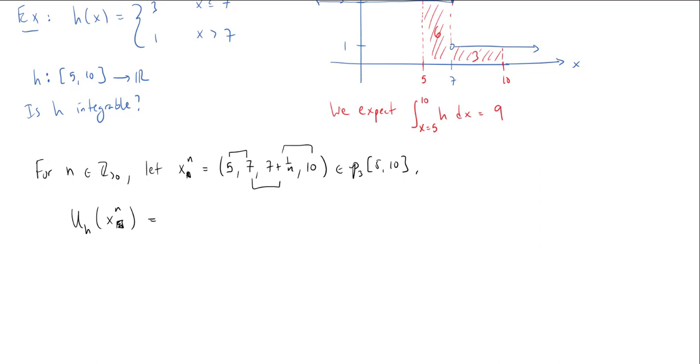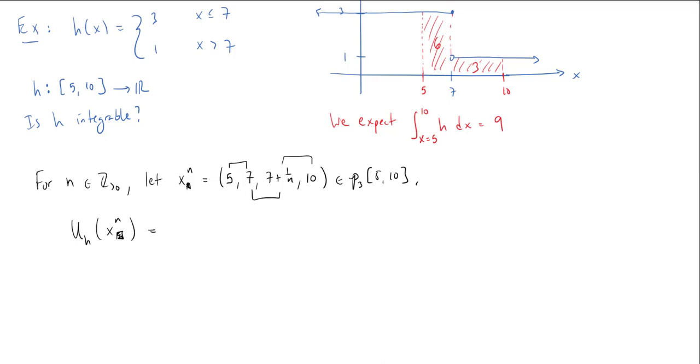What I need to do is for each of these intervals—there's one interval, a second interval, a third interval—I need to compute the supremum of the function h on that interval times the base size. Between 5 and 7, the supremum of h, well h is constant from 5 to 7, just has height 3. So this will be 3 times the width, and the width from 5 to 7 is 2.